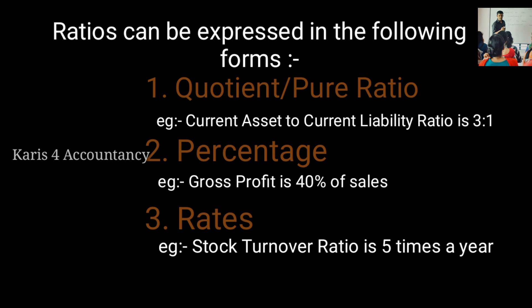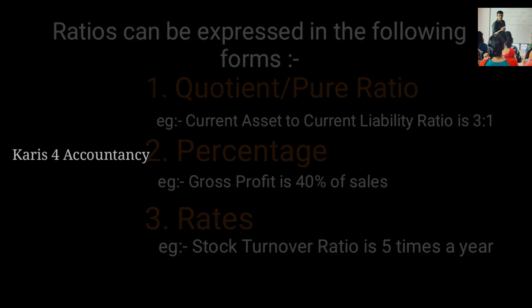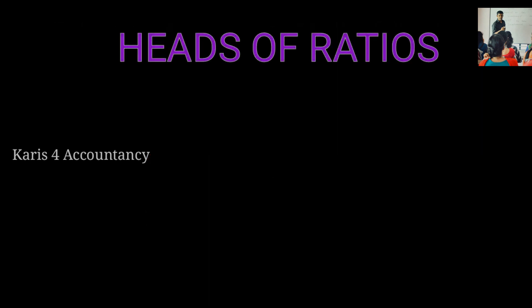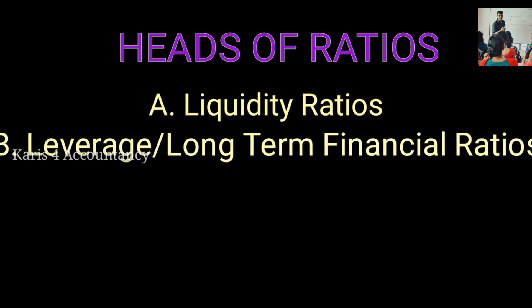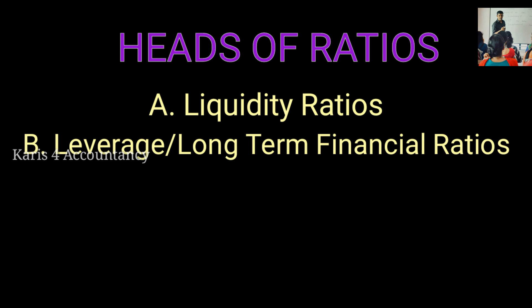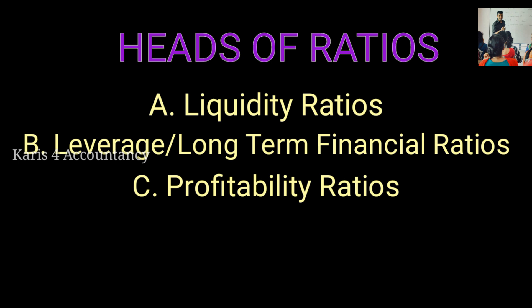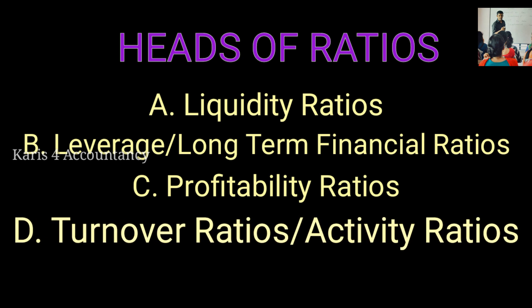The forms of ratio are: 1. Pure ratio, 2. Percentage rate. The classification of ratios includes: A. Liquidity ratio, B. Leverage ratio — that is long-term financial ratios, C. Profitability ratios, D. Turnover ratios.